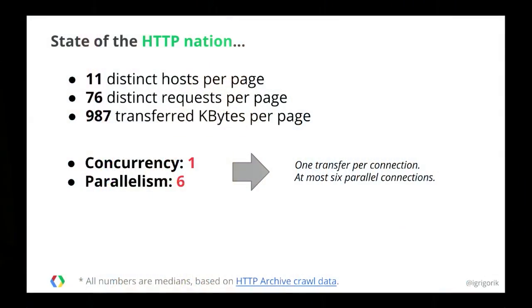Before we talk about what we're trying to solve, it helps to understand the actual problem. We want to build a real-time web where everything is delivered quickly and we can render all the pages. If you look at the median page on the web today, we don't need just one server to render a page — we need 11 servers, because we are pulling in components from all over the web: social widgets, real-time streams, images from another CDN. There's a median of 11 domains, and some sites use up to 100 different distinct hosts to compose a page. We're also downloading a lot of assets — images, JavaScript, CSS — transferring about a megabyte of data for your median case.